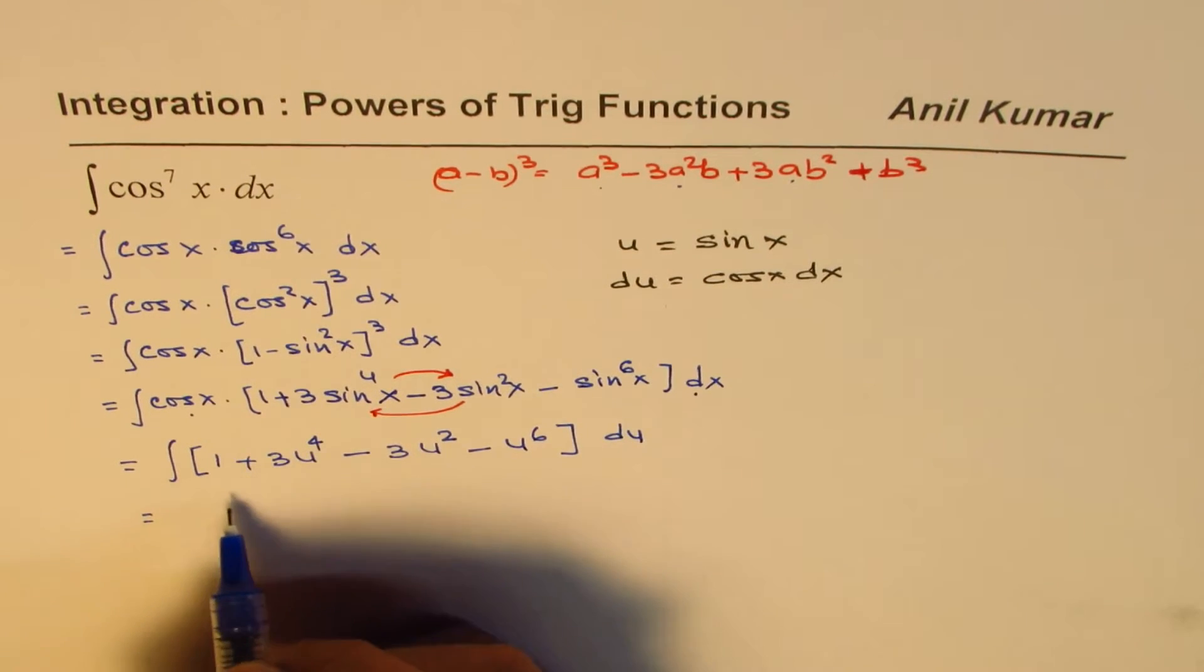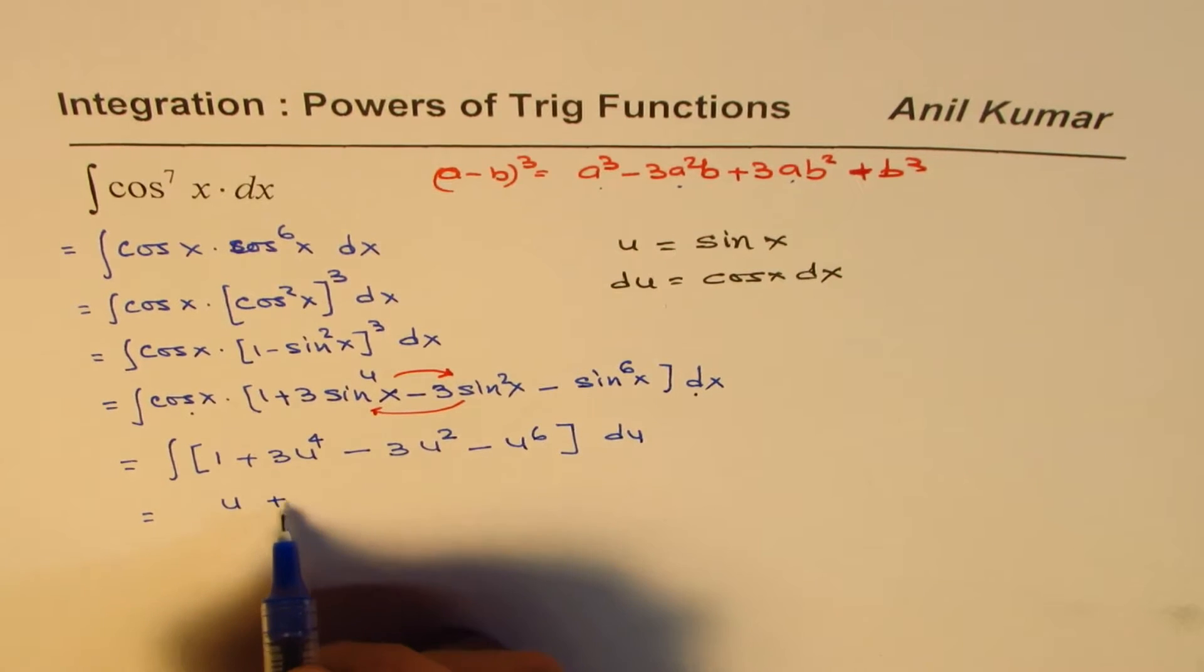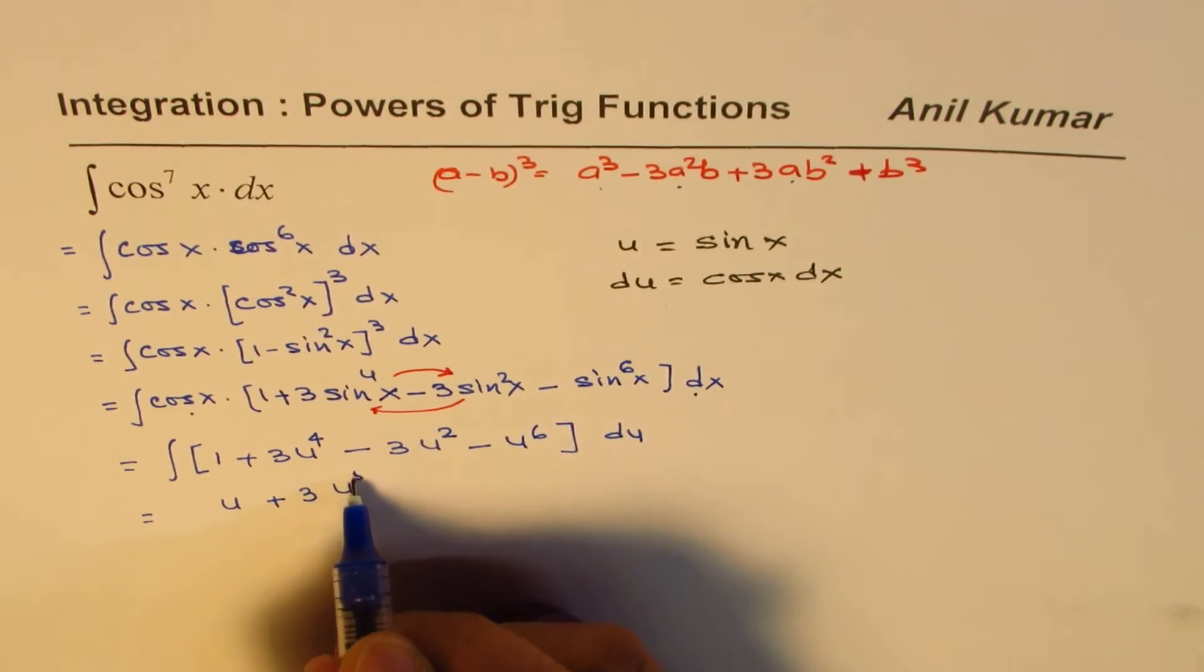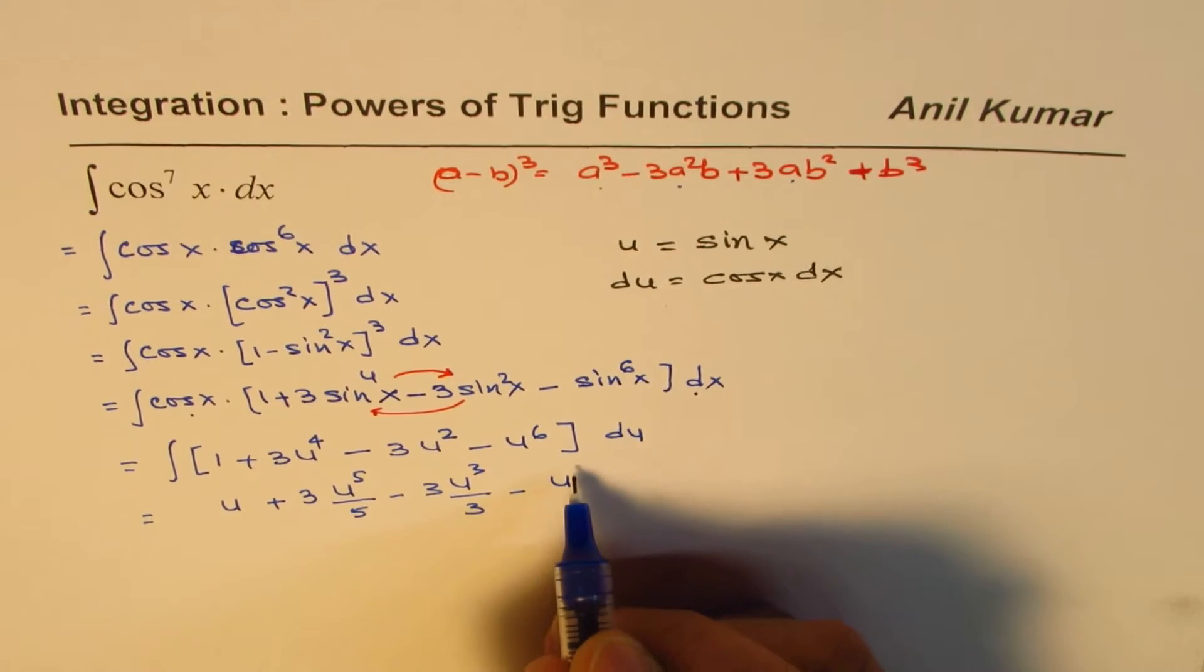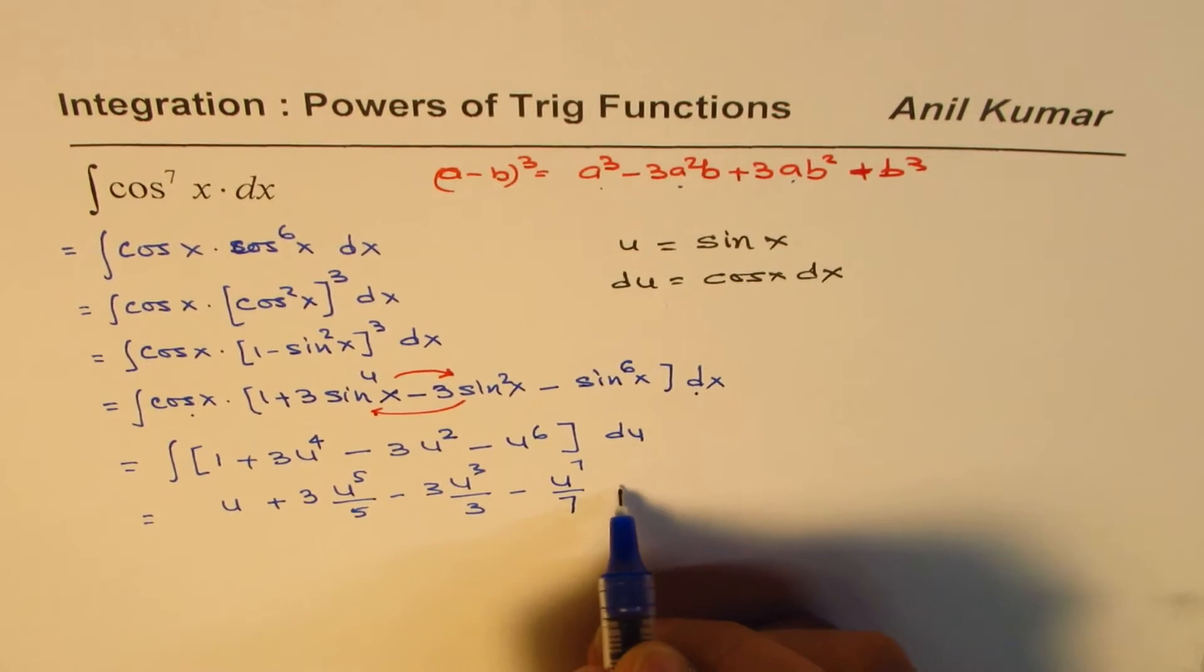This could be integrated. Integral of 1 is u plus integral of this is u to the power of 5 over 5 minus 3u cube over 3 minus u to the power of 7 over 7, plus c.